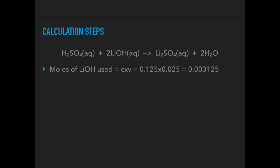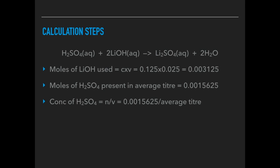Once you've done the practical, here are the calculation steps you would carry out. There's the equation for the reaction that's taking place. The first thing you'd do is work out the moles of lithium hydroxide used from concentration times volume. The concentration of the lithium hydroxide is 0.125 moles per decimetre cubed, and we pipetted out 25 cm³ which is that in decimetres cubed. So that's how many moles of lithium hydroxide have been used. The sulphuric acid present in the average titre is going to be half of that—see that 2 to 1 ratio. So I've just divided that by 2. And therefore the concentration of the sulphuric acid is those moles divided by the average titre.